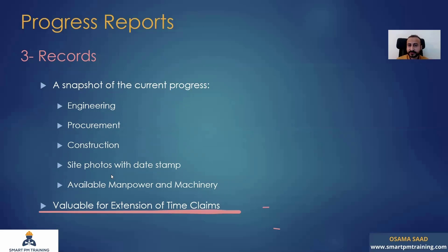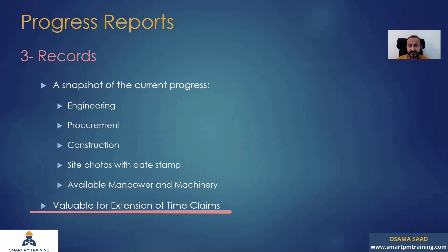But the snapshot is very important for extension of time claims, for example. After one year from the project start, you have a specific progress status, and many parties contributed to the current progress status. The contractor was in delay for some activities, the consultant delayed the approval for some activities, the client delayed the nomination — there are many things going on. It is important to record what is going on on a weekly basis, and a snapshot of everything that happened over time. Maybe you are doing paint work right now, but you should have completed all paint work, which means you are in delay. A snapshot will help you identify the parties responsible for the delay.